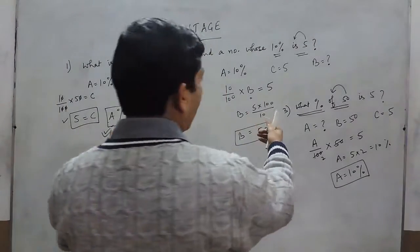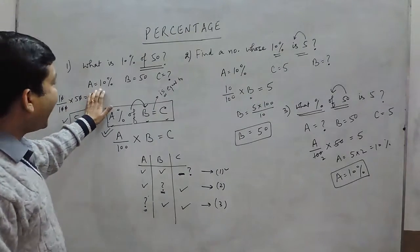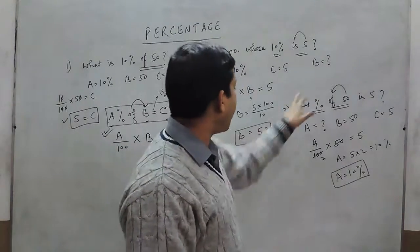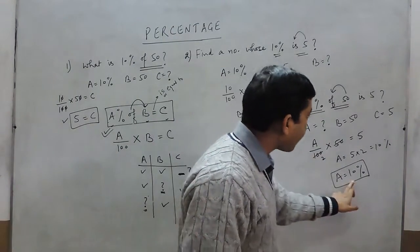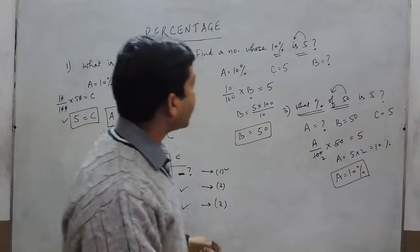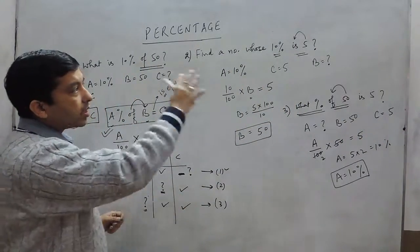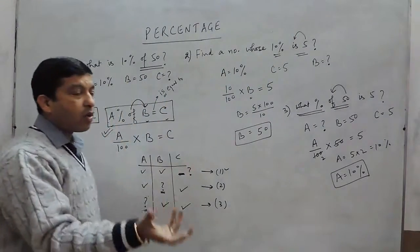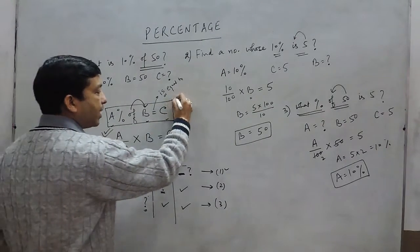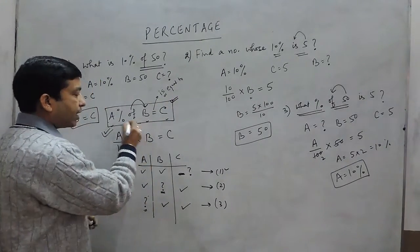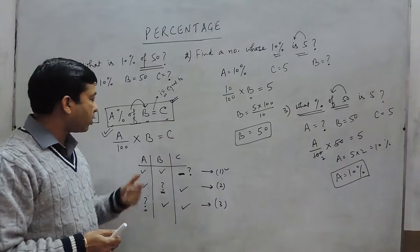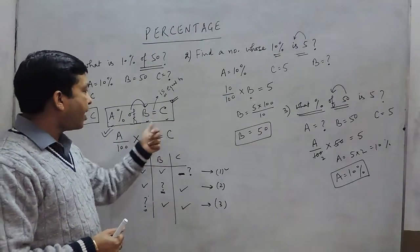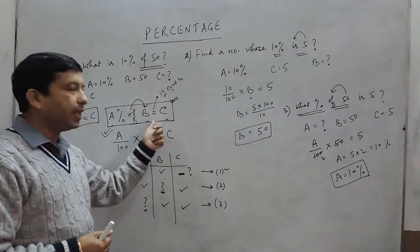If we closely look at all three examples: A is 10%, B is 50, and C is 5 in every case. Conceptually all three are the same question — the difference is only in the wording and what we are asked to find. Keep in mind: A percent of B always equals C, where A is always in percentage, B always follows the word 'of,' and C always follows the word 'is.'